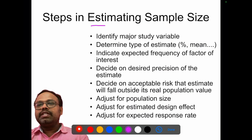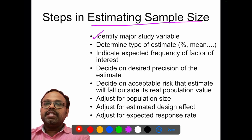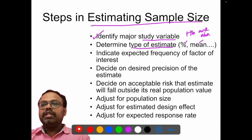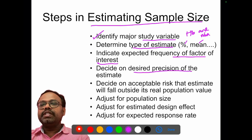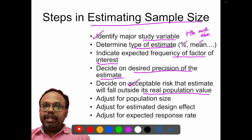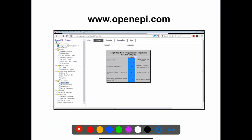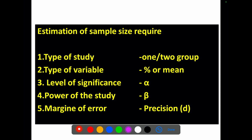To sum up, the steps in estimating sample size are: identify the major study variable (e.g., hemoglobin or anemia); determine the type of estimate — whether proportion or mean; indicate the expected frequency of the factor of interest; decide on the precision of the estimate; decide on the acceptable risk that the estimate will fall outside its real population value; adjust for population size, estimated design effect, and expected response or follow-up rate. Then we arrive at the final sample size. This can be done using software or websites — the most commonly used site is OpenEpi.